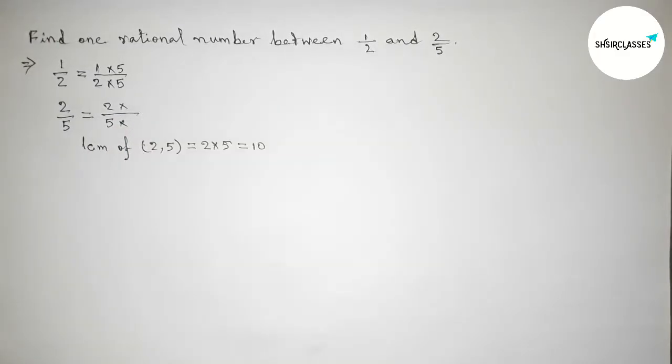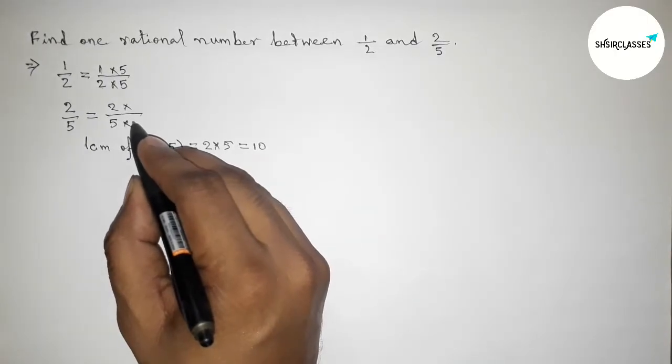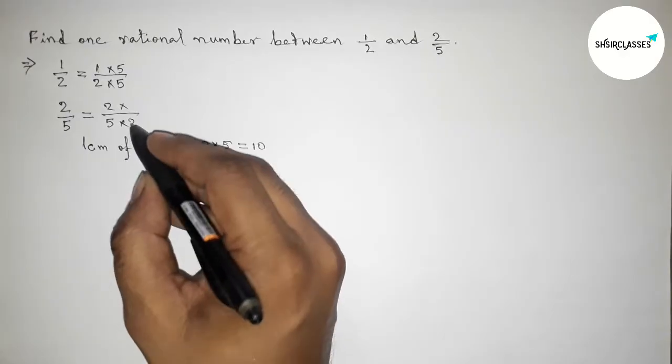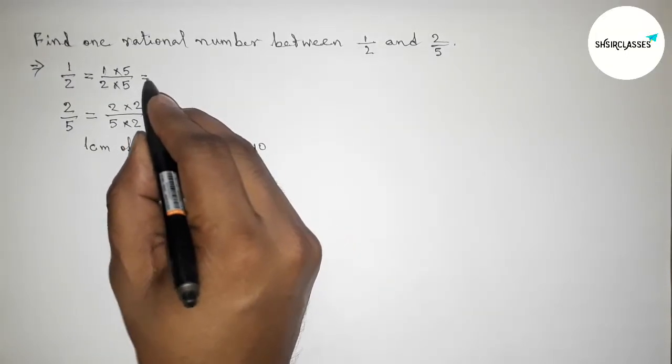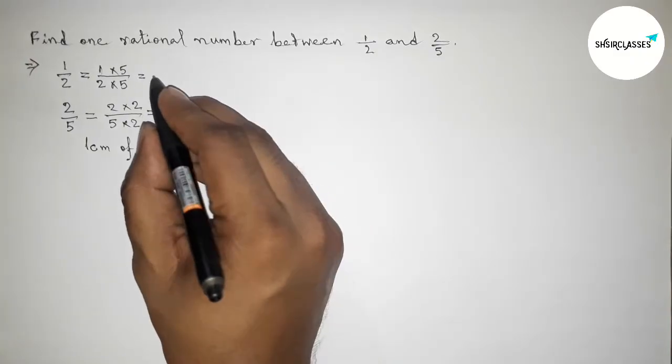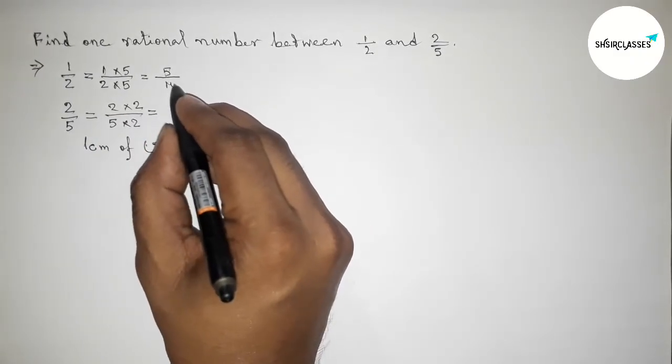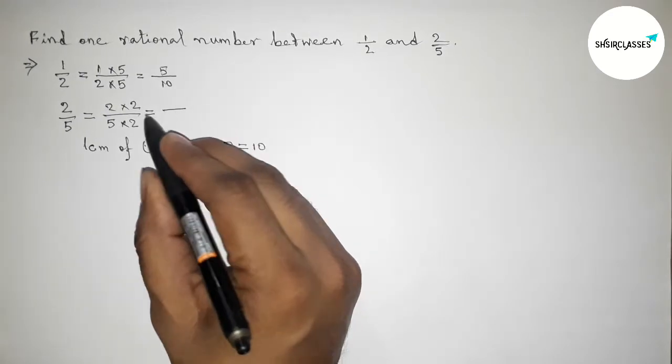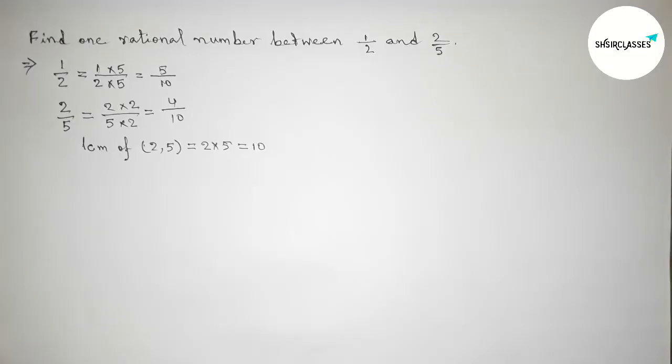Similarly, making 10 denominator, 5 times 2 is 10, so we have to multiply up and down by 2. So now here this is 5 by 10, and here 2 times 2 is 4 by 10. So both the denominators are equal at 10.